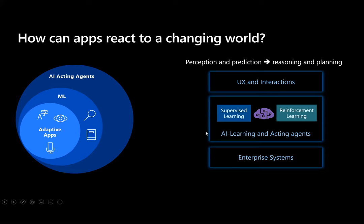Between the user interface and the enterprise system, in the middle layer of business logic, we bring in an AI learning engine with all the machine learning elements. Today we focus on reinforcement learning, where you have agents operating in environments that include all the users and data. The agent tries different actions on the world, observes the reward, and learns from the outcomes.